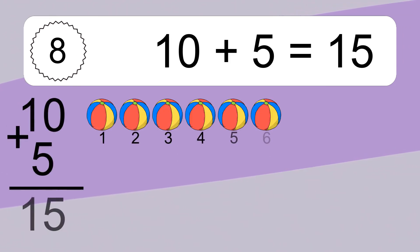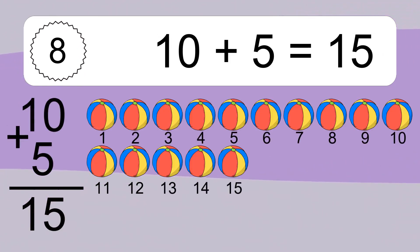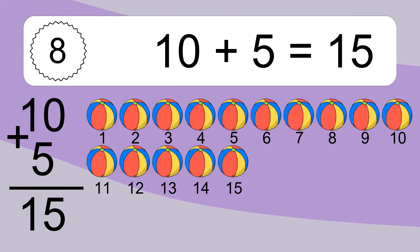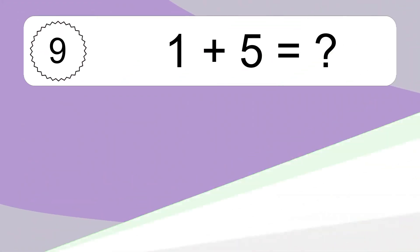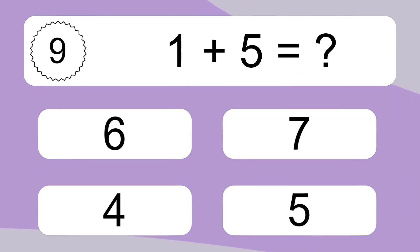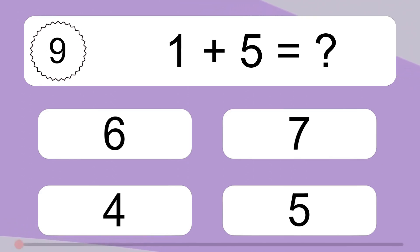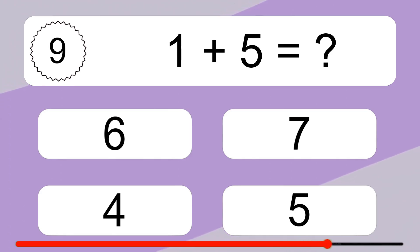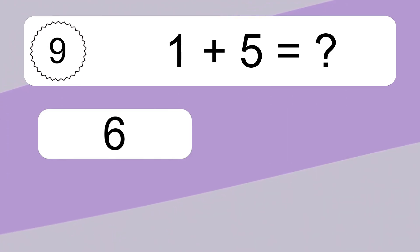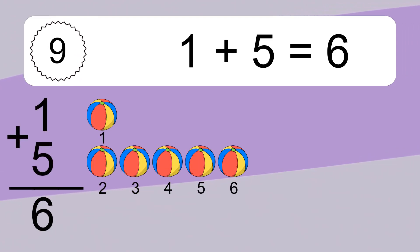10 plus 5 equals 15. Let's count it. 1, 2, 3, 4, 5, 6, 7, 8, 9, 10, 11, 12, 13, 14, 15.